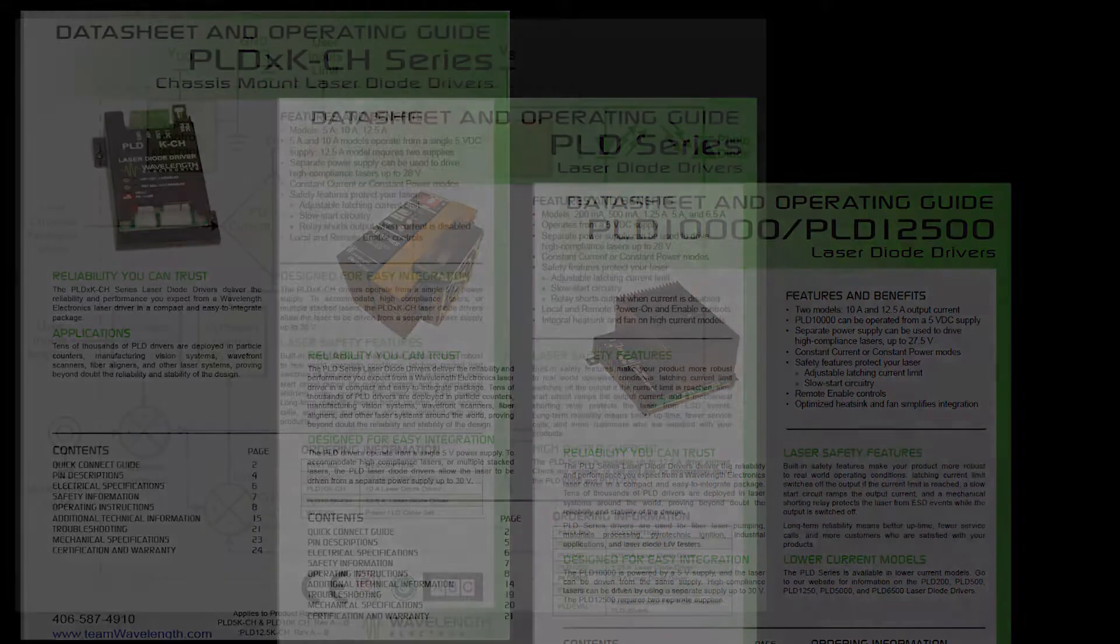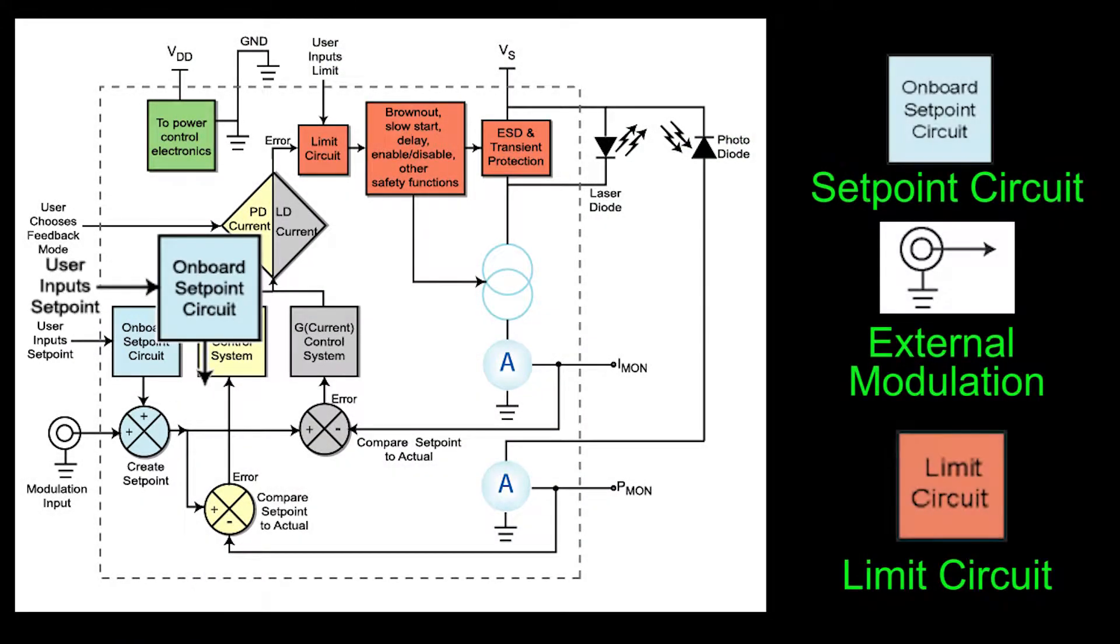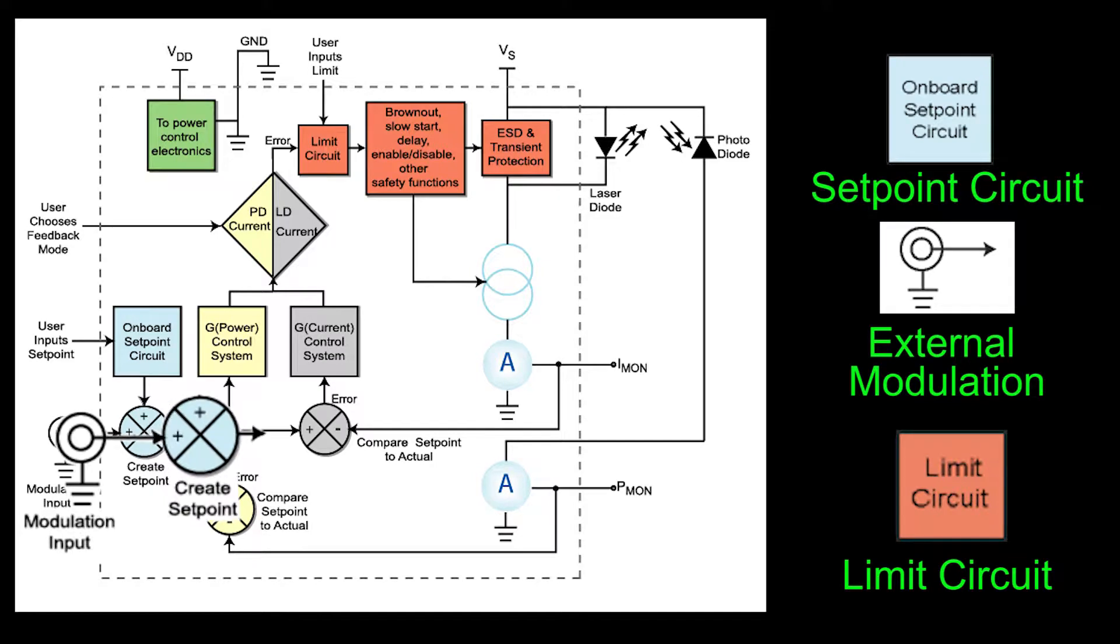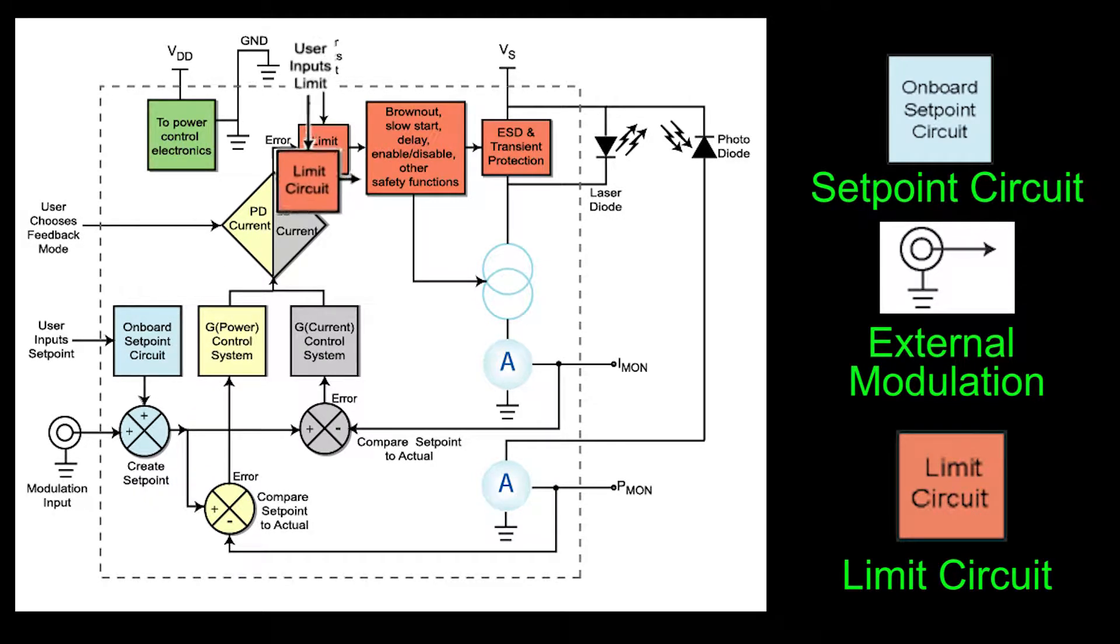The set point voltage is adjusted by a potentiometer in the driver or by an external input that sums with the internally generated voltage. Current limit is set by a separate potentiometer in the driver.